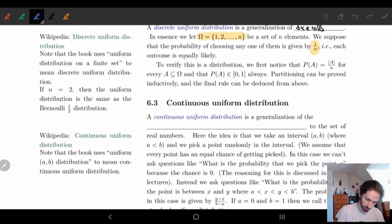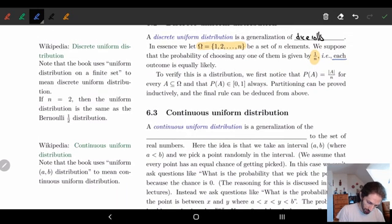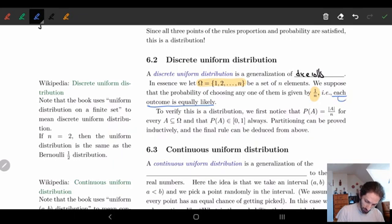Now, this idea of every outcome being equally likely, each outcome being equally likely, this is the definition of uniform. And that's where the uniform comes in for a discrete uniform distribution. Discrete comes from because we're able to count the numbers. So this is where discrete uniform distribution, the name comes from.